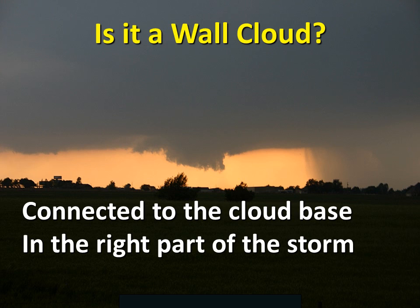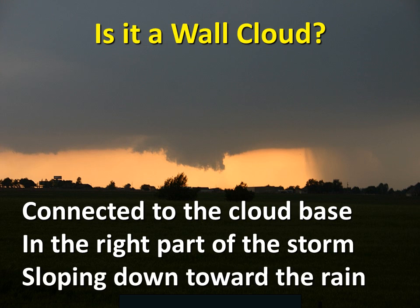Is it in the right part of the storm? Wall clouds usually form in the action area, where the updraft and the downdraft are close together. Is it sloping down toward the rain? Not all wall clouds will do this, but this can be a sign that the cloud you're looking at is associated with a strong updraft and is ingesting cool, rainy air from the downdraft area.